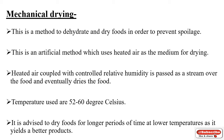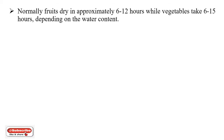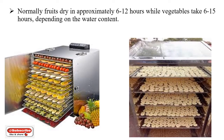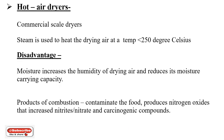The temperature used in this drying is around 52 to 60 degrees Celsius. It is advised to dry foods for a longer period of time at lower temperatures, as it produces a better product. Normally, fruits dry in approximately 6 to 12 hours, while vegetables take around 6 to 15 hours depending on their water content. These mechanical dryers are used in small-scale industries.